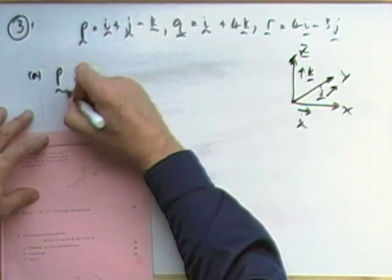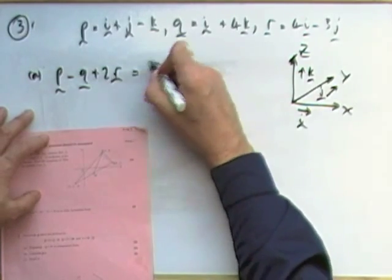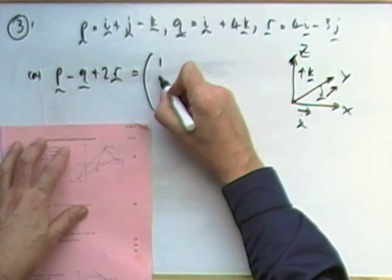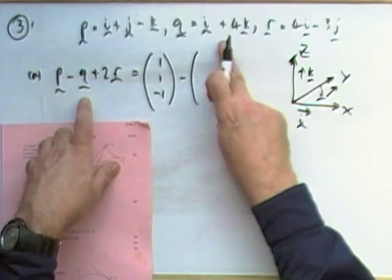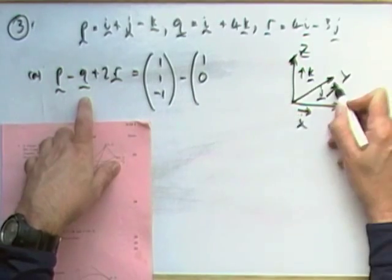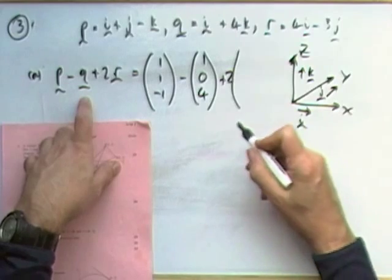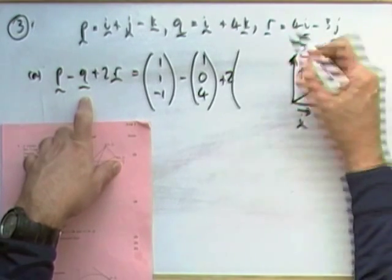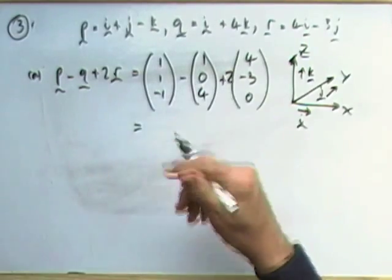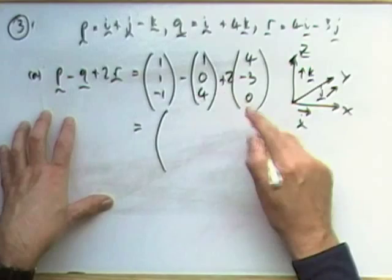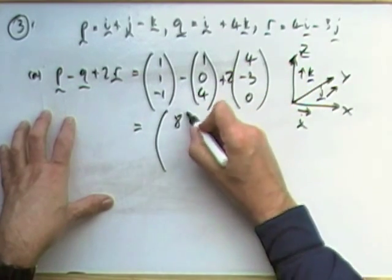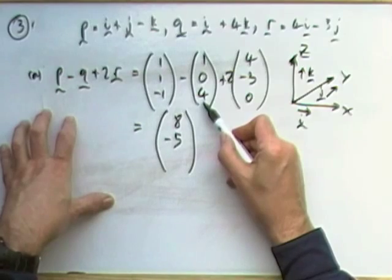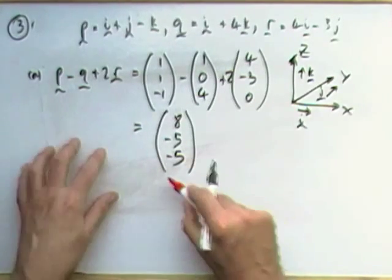Part A: Express P minus Q plus 2R in component form. I'll put it into component form. P is (1, 1, -1). Take away Q. Now there's a missing J in Q, so it's (1, 0, 4). Plus 2 times R. There's another missing one, it's K, so R is (4, -3, 0). That's just arithmetic: 1 take away 1 is 0, plus 8 is 8. 1 take away 0 is 1, minus 6 is minus 5. Negative 1 take away 4 is negative 5, plus nothing is still negative 5. So that's (8, -5, -5).